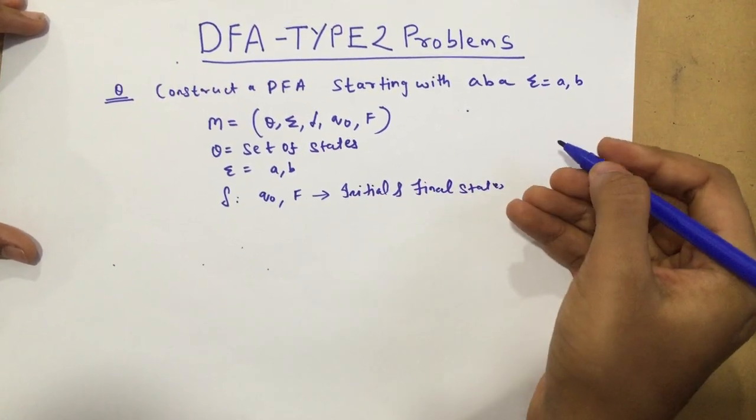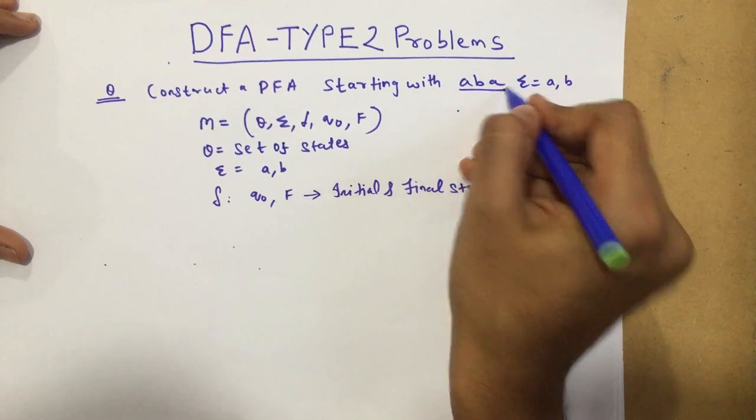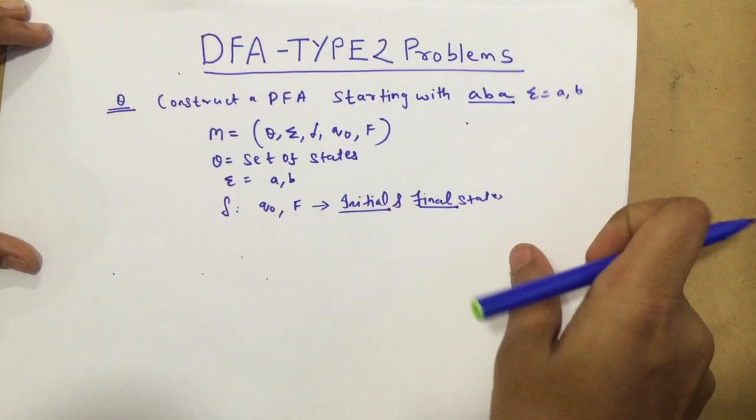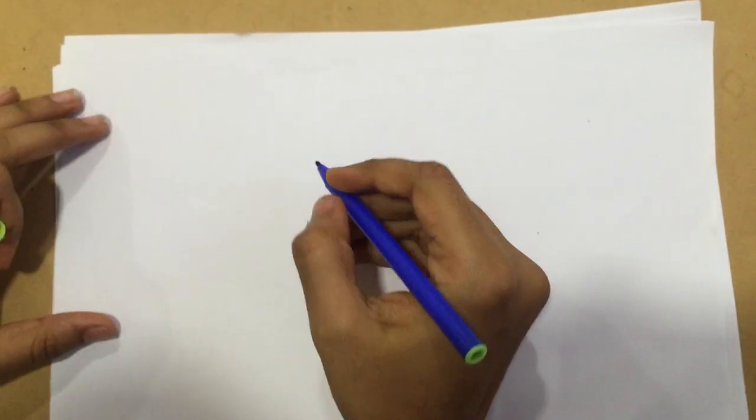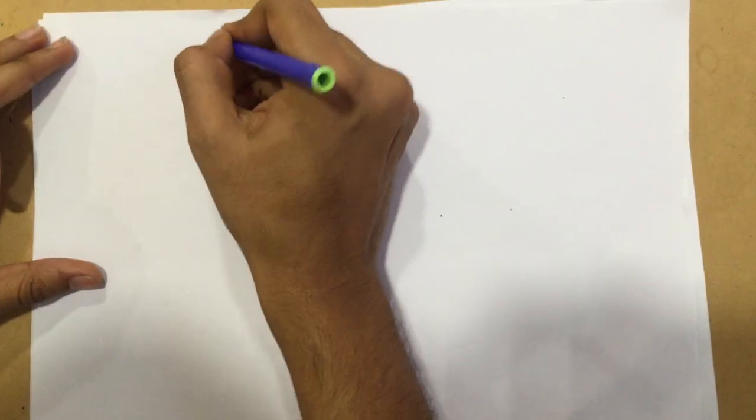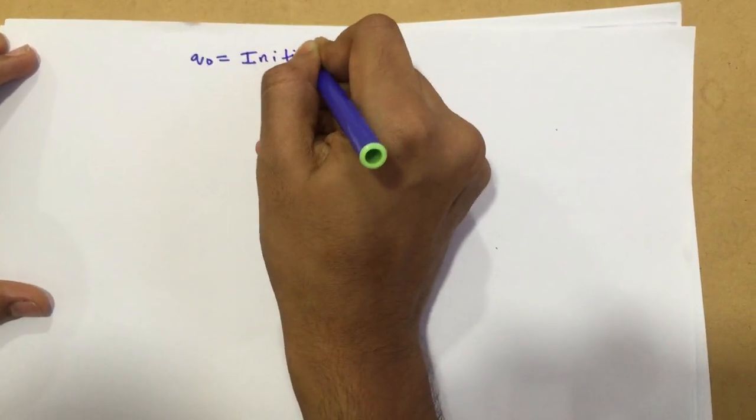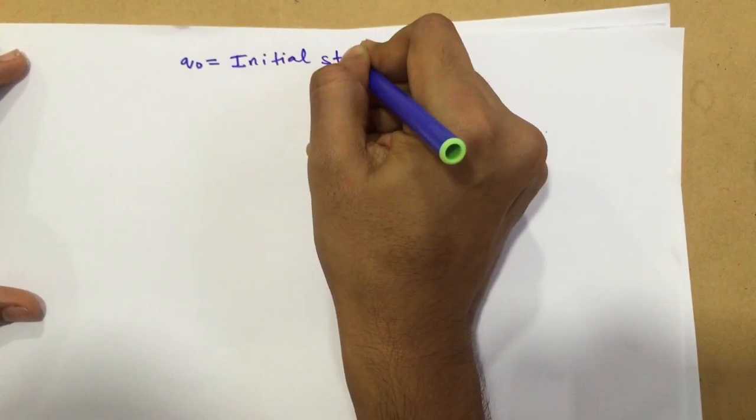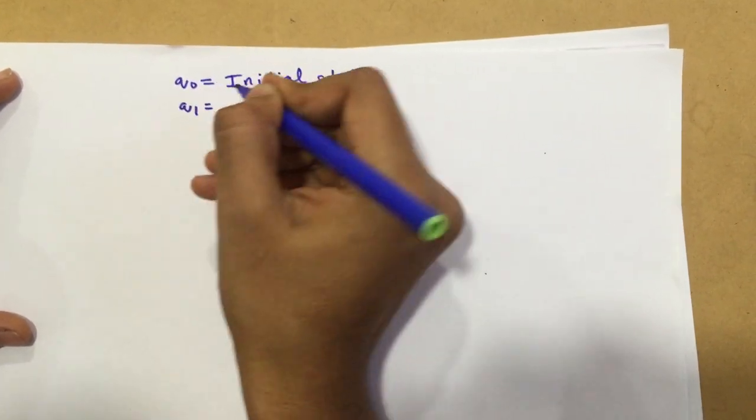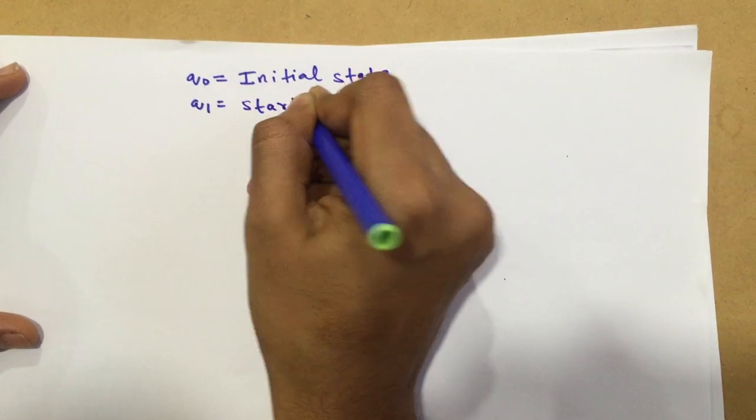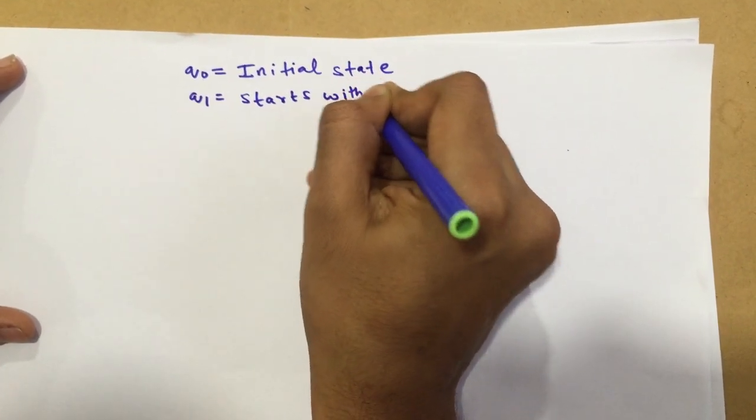That is, if my string is starting with A, B, A, that is our problem, then it should go to the final state. So how do you do this? Well, we're going to use a very simple approach. First, we're going to declare the states. So, initially, Q0 will be my initial state because that's where I start off.